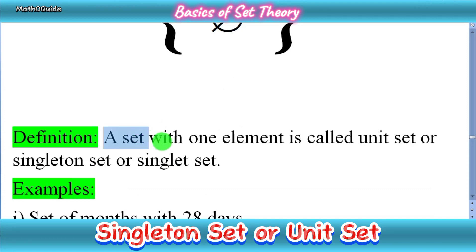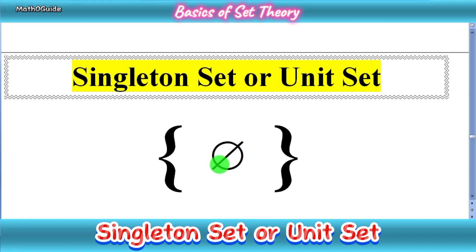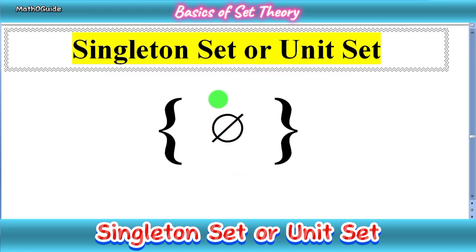A set with one element is called a unit set, singleton set, or singlet set. This is a very basic definition and concept: a set having only one element is called a singlet set.